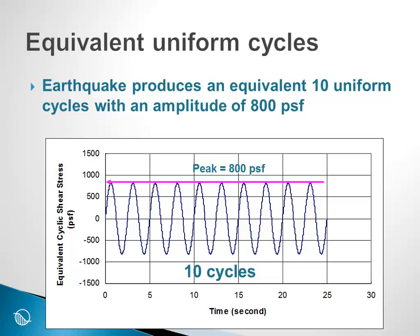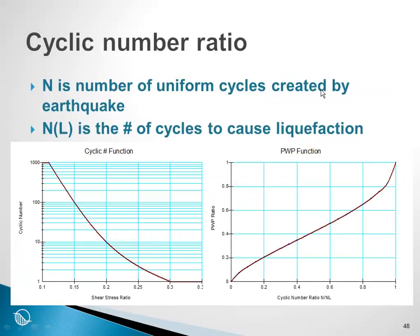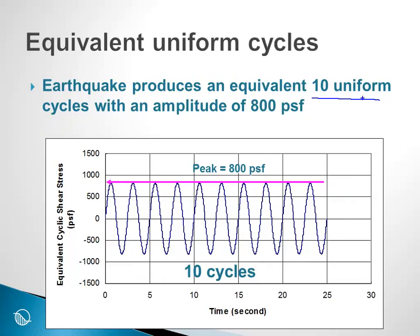So the earthquake of magnitude 7, with its irregular shaking, with a peak shear stress level of 1230, will produce an equivalent of 10 uniform cycles with an amplitude of 800 pounds per square foot. Here is our amplitude of 800 pounds per square foot. And we have 10 cycles. This is the procedure that is used to relate the field irregular cycles to the laboratory testing uniform cycles.